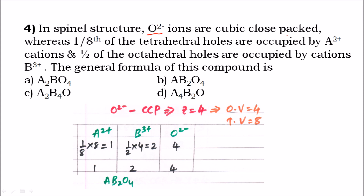Fourth question: in a spinel structure, O²⁻ ions are cubic close packed. So the number of atoms equals four. One-eighth of the tetrahedral holes are occupied by A²⁺ cations and half of the octahedral holes are occupied by B³⁺ cations. Octahedral holes equal four and tetrahedral holes equal eight.